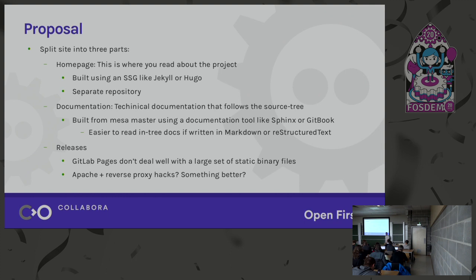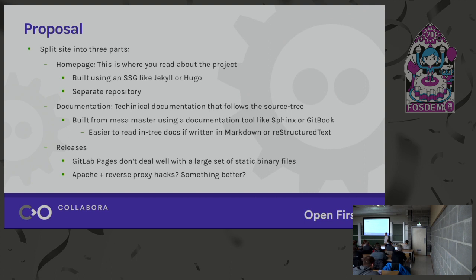This means we can actually read the source documents in a reasonable, human-readable markup format. For releases, I don't really have a great answer — it's a little bit of a pain. GitLab Pages doesn't deal great with a large set of static binary files; you have to upload them for every build. So I'm wondering if we should keep a separate web server instance running and use some reverse proxy, or move to somewhere else. The problem with moving is that we don't want to break links or break current build scripts, so we need to at least live with a reverse proxy for some time to keep links working.